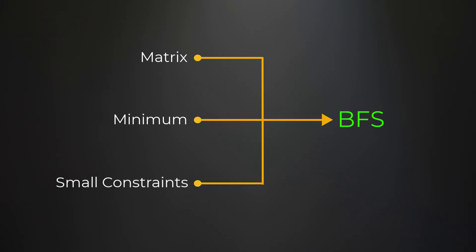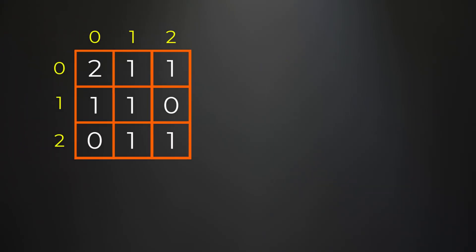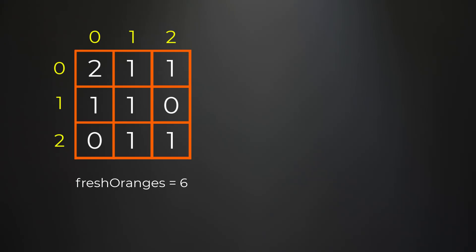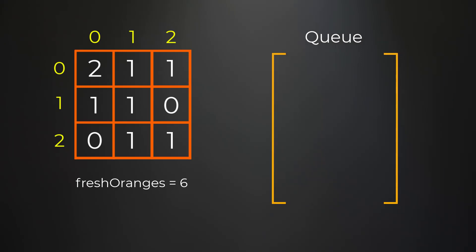Now let's dive into the algorithm. Say we have this example — first we need to count how many fresh oranges we have, essentially counting all the ones in the matrix. In this example we have six. Since we're doing a BFS we're going to use a queue to store positions. We're going to add all positions that have a rotten orange to the queue, because every minute all neighbors to a rotten orange will turn rotten. In this example we only have one rotten orange, so we add position (0,0) to our queue.